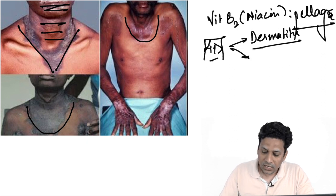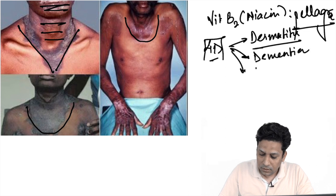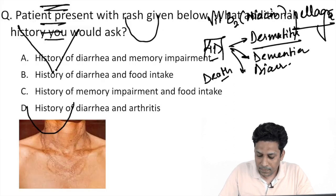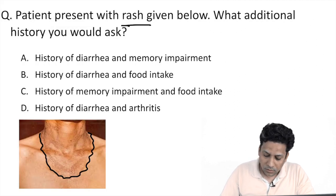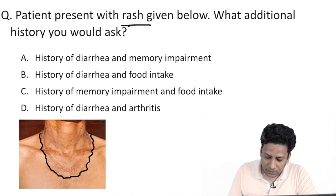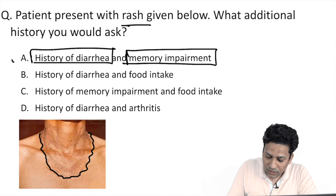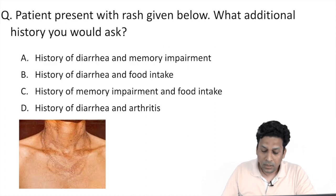The other Ds are dementia, diarrhea, and if you do not treat the patient, then death. So you can very easily make out the answer — history of diarrhea and dementia, that is memory impairment, is important. So this is the answer.